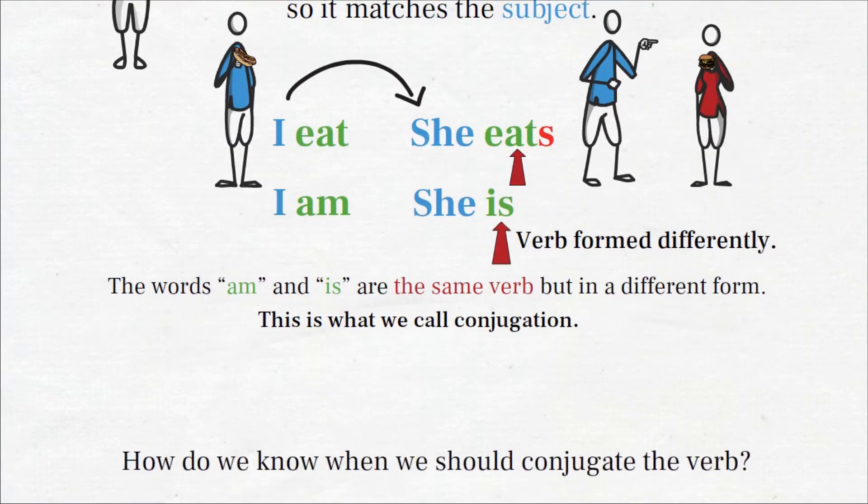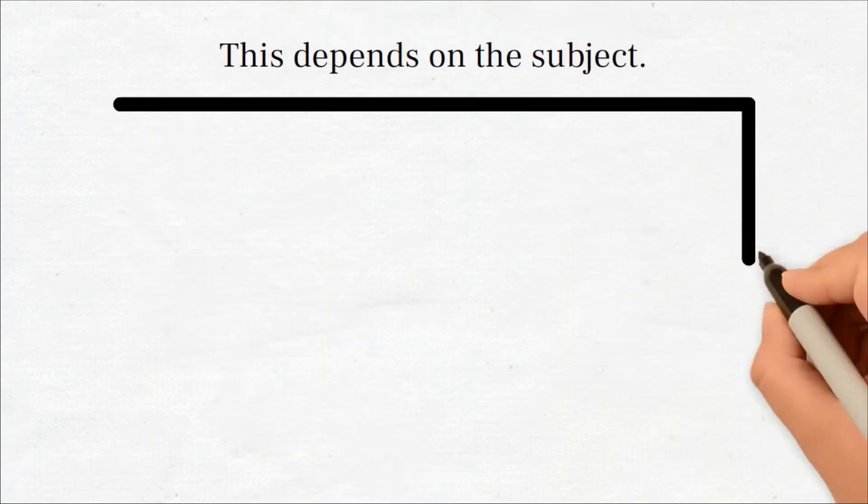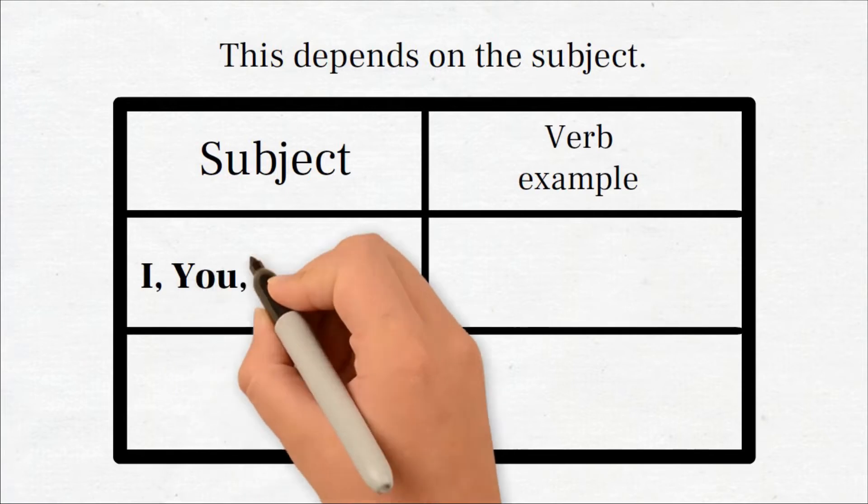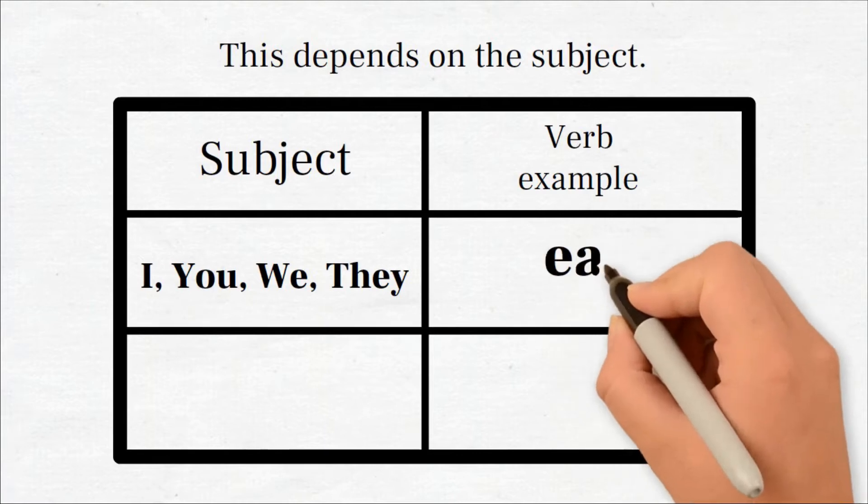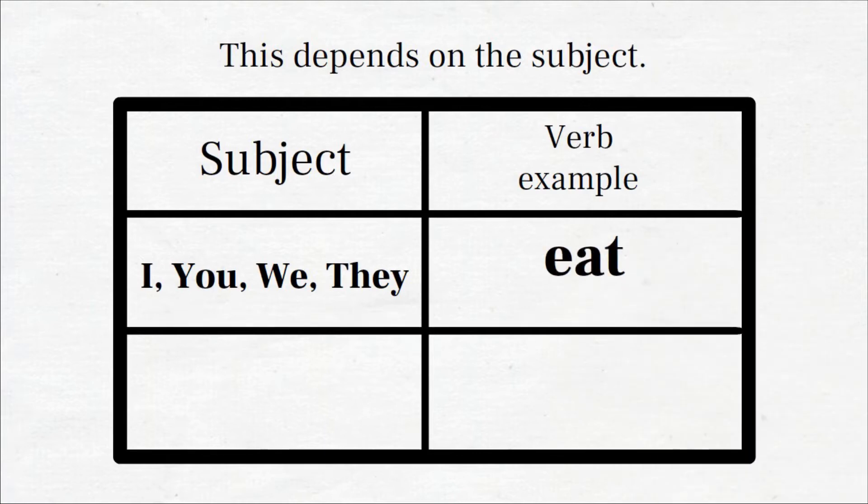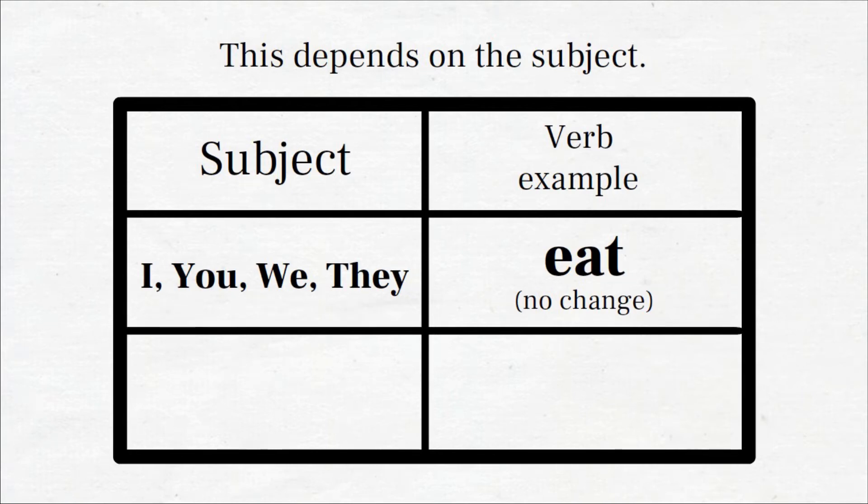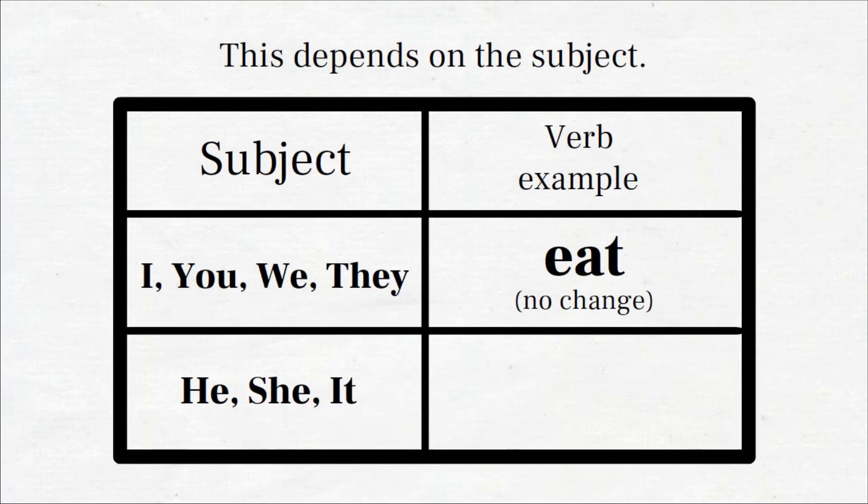How do we know when we should conjugate the verb, and what form of the verb to use? This depends on the subject. With I, you, we, and they, we don't usually change anything. The verb stays the same. And where the subject is he, she, or it, we would usually add s.